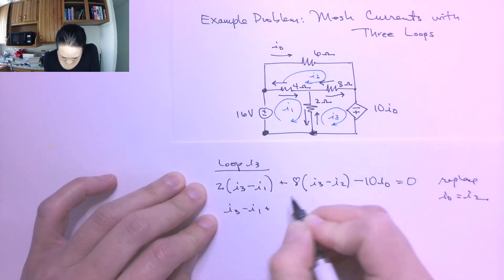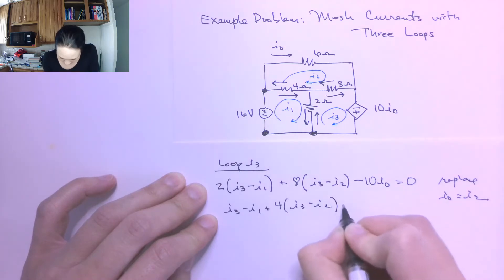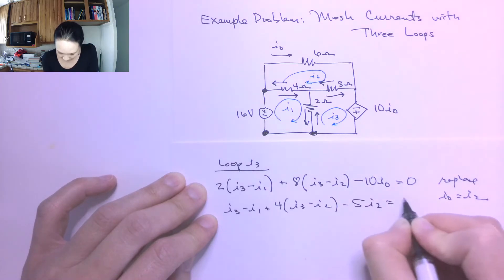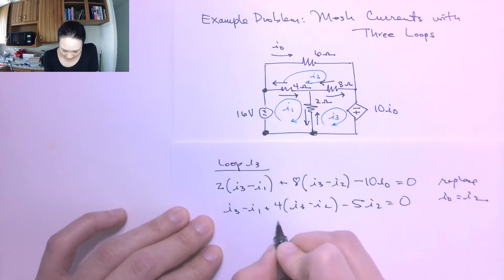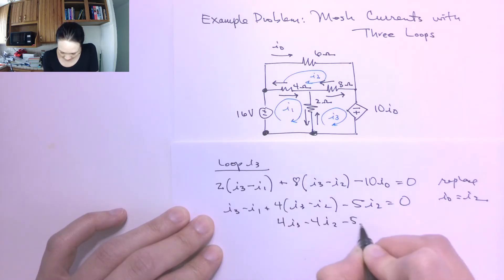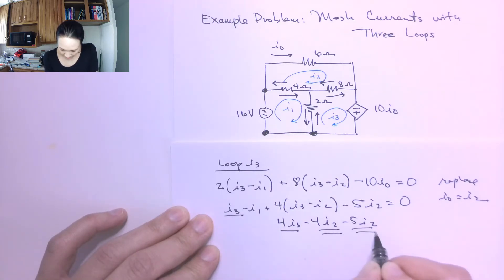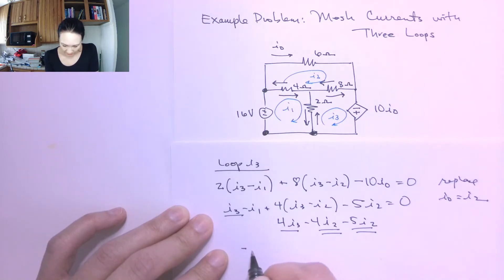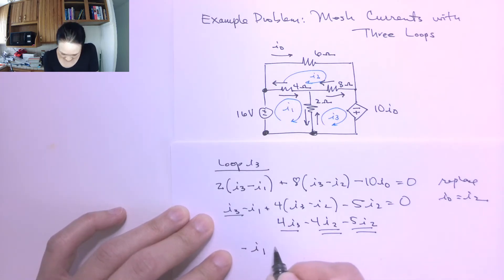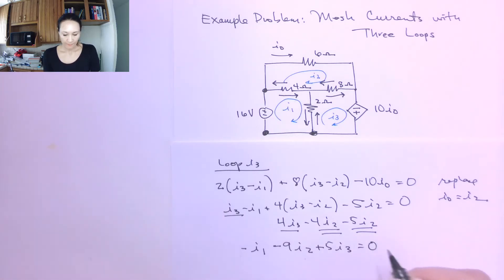Dividing everything by 2 and substituting: (I3 minus I1) plus 4 times (I3 minus I2) minus 5 times I2 equals 0. Distributing and collecting terms gives negative I1 minus 9I2 plus 5I3 equals 0. This is in standard form.